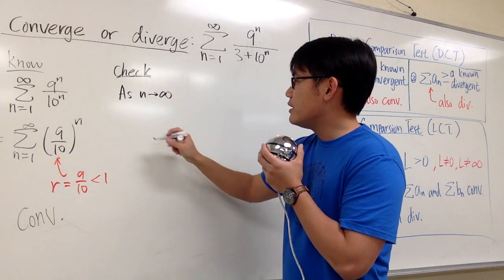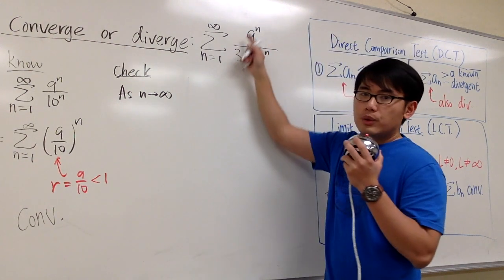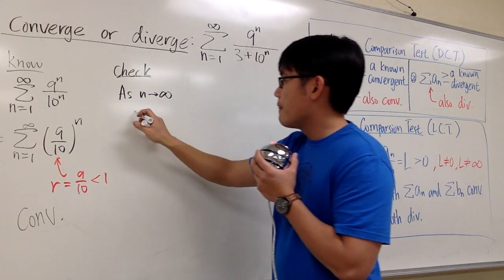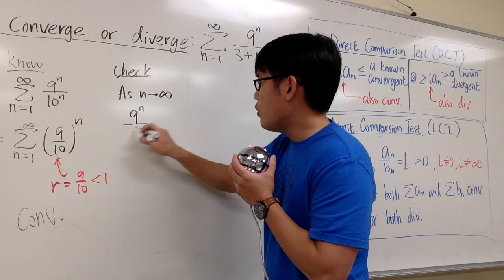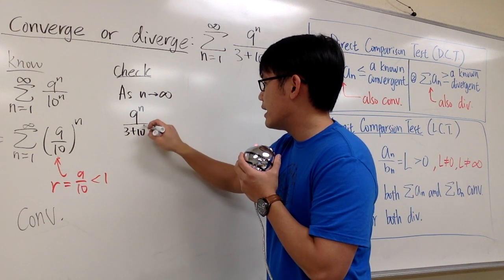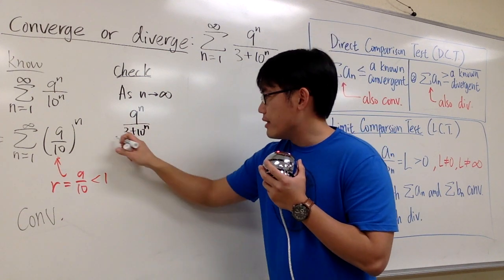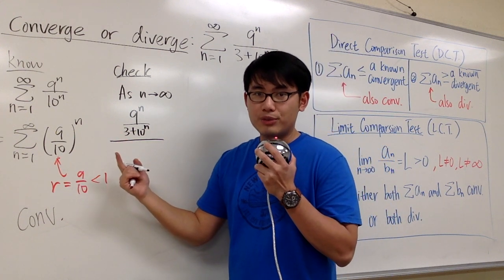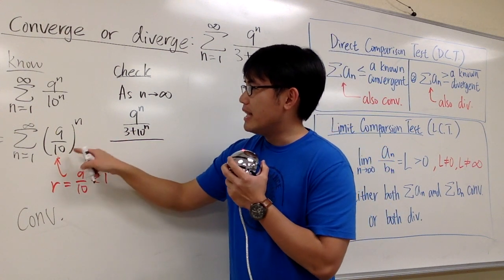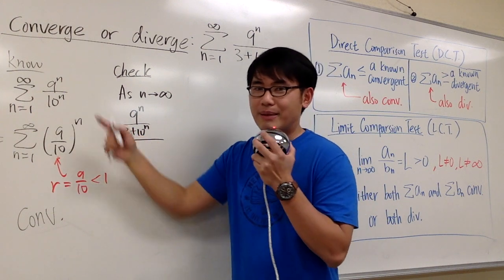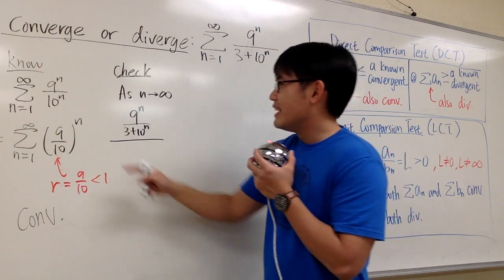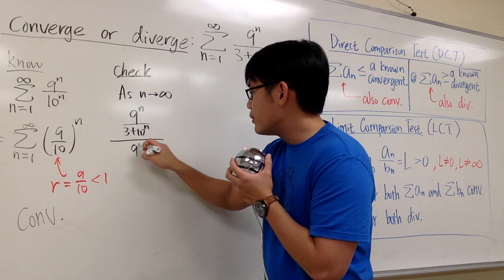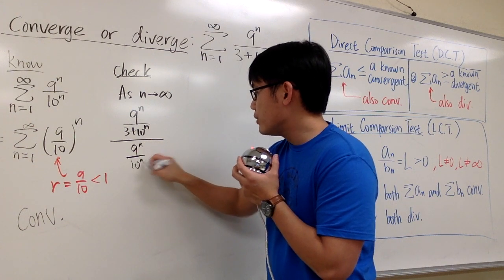So I can just say as n goes to infinity, let me put down a_n, which is the original, 9 to the nth power over 3 plus 10 to the nth power, and then over the b_n, which is something that we know much better, which is that. But let me put it in that form, because I'm going to flip the fraction in a minute. So I'm going to write down 9 to the n over 10 to the n.